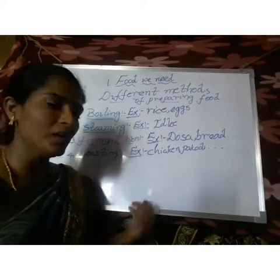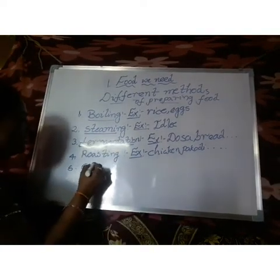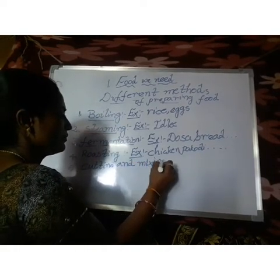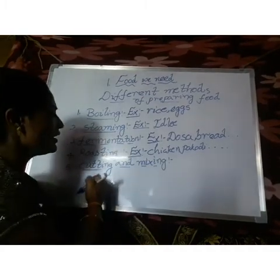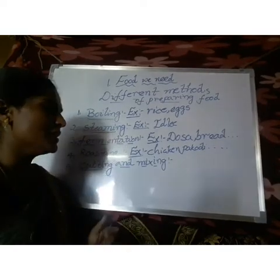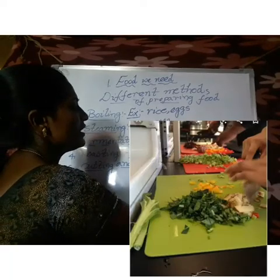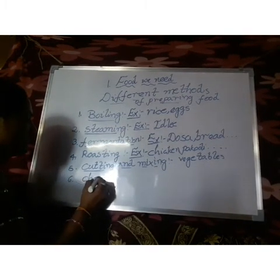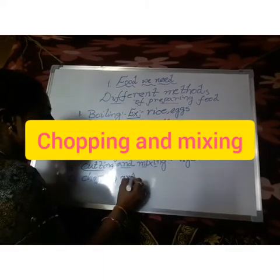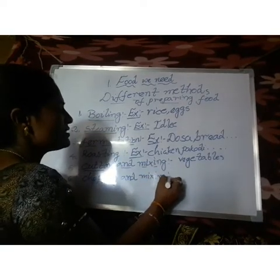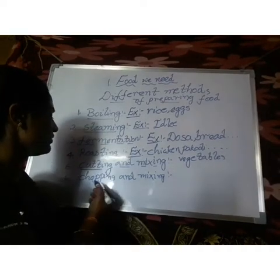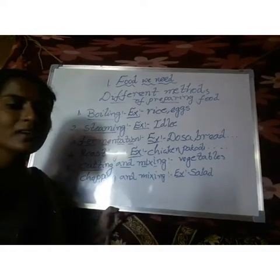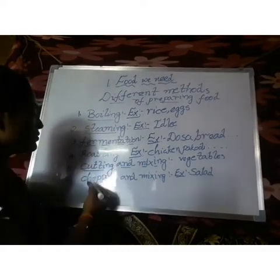The fifth method is cutting and mixing. All vegetables have to be cut, and after that only we mix them with different materials. So all vegetable curries come under this method — cutting and mixing. Then there is chopping and mixing, which is also one method. The food items we can prepare with chopping and mixing — for example, salads. Nowadays we all show interest in eating salads, and to prepare salads we use chopping and mixing.